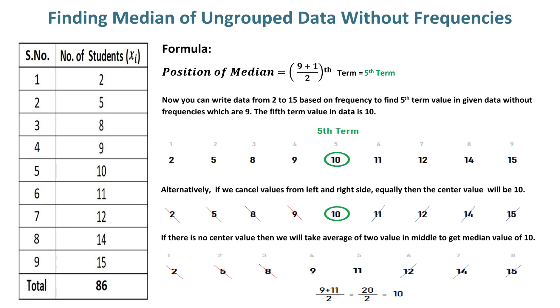Alternatively, if we cancel values from left and right equally, the center value will be 10. If there is no center value, take the average of the two middle values to get the median. For example, the average of the 4th and 5th term values (9 and 11) gives a median of 10.